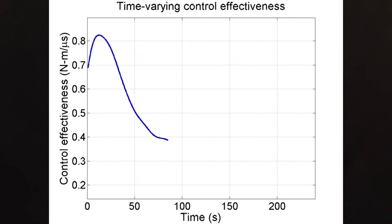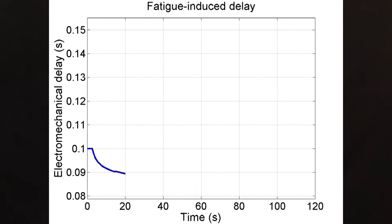Beyond challenges associated with non-linearities and uncertainties, which our community has developed numerous tools to address, a unique challenge — and perhaps one of the biggest practical issues to deal with — is muscle fatigue. From a control perspective, fatigue causes a time-varying change in the control effectiveness matrix. Also, there is a delay between the application of voltage and the torque produced by the muscle.